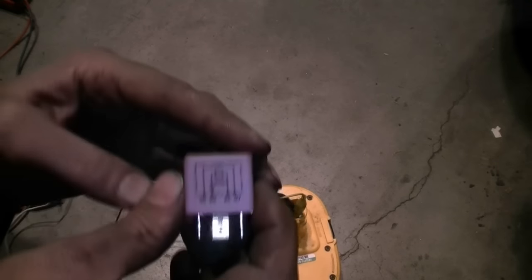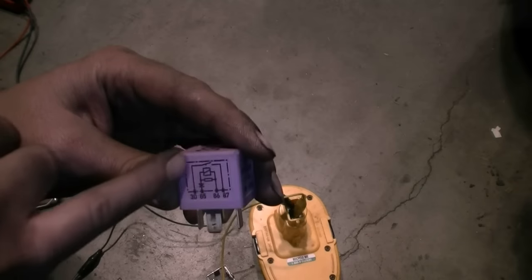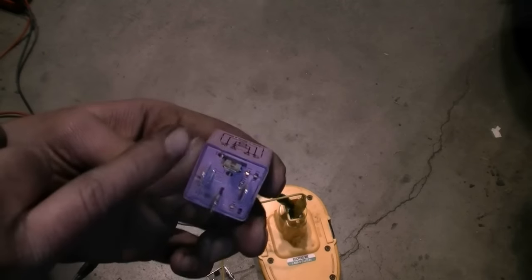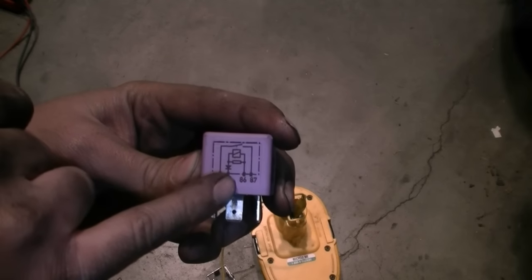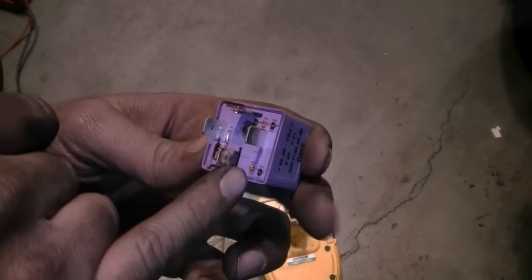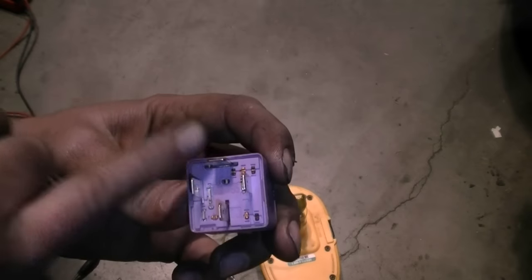So basically every relay you find is going to come with a diagram on the side and as you can see each one of these here is numbered. We got 30, 85, 86, 87 and then you go look next to each one and you're going to see the numbers. So we got 30 here, 85, 86 and 87 up top.